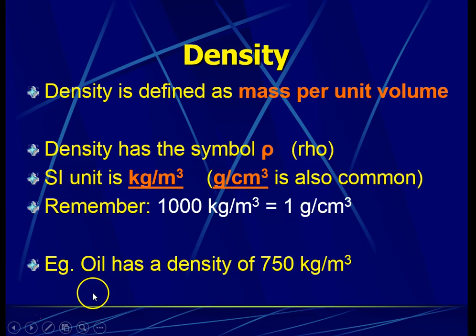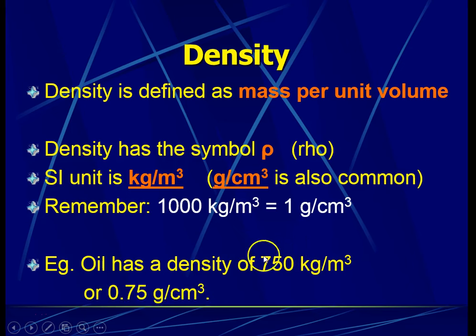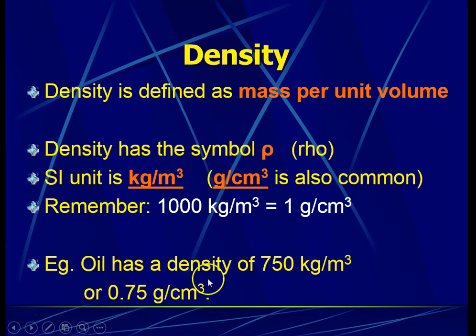For example, if we have oil which has a density of 750 kilogram per meter cube and we would like to express its density in gram per cm cube, we simply take 750 and divide by 1,000. That gives us 0.75 gram per cm cube. So the density of oil can equally be expressed in either unit using the conversion: 1,000 kg/m³ equals 1 g/cm³.